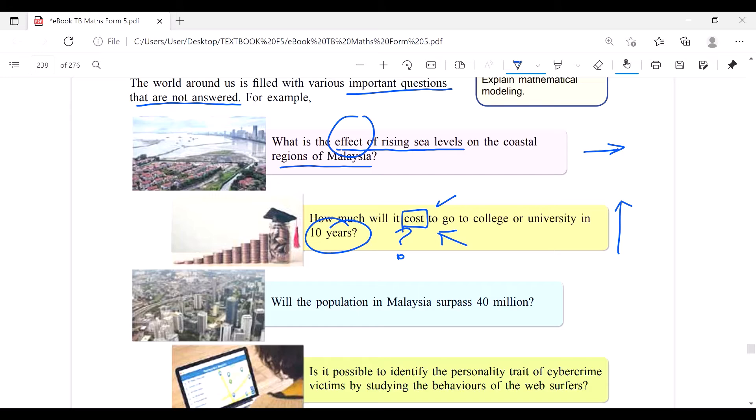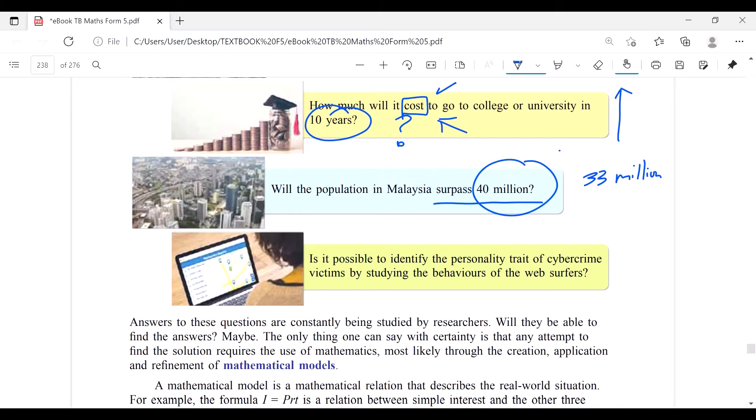Will the population in Malaysia surpass 40 million? Now we are 33 million. Will it surpass 40 million? Most probably yes. Is it possible to identify the personal threat of cybercrime victims by studying the behavior of web servers? Most of our students especially become cybercrime victims. So is it possible we identify the personal threat of this victim by studying the behavior of them when they search, when they surf the web?